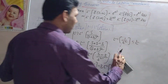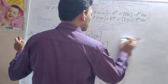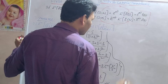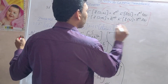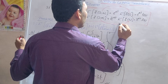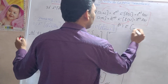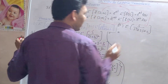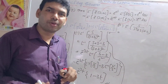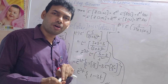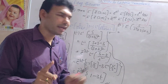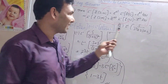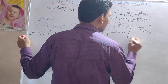Now coming to the last and important third problem: L inverse of s by (s² + 2s + 2). Here the denominator is a second-degree equation in s. We apply the first shifting theorem by completing the square using the (a plus b) whole square formula.